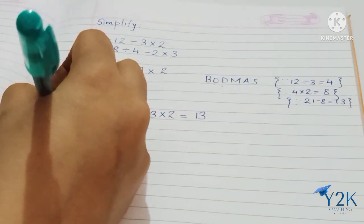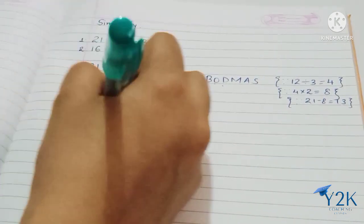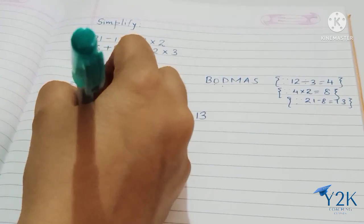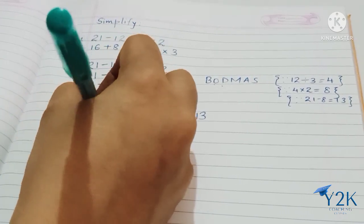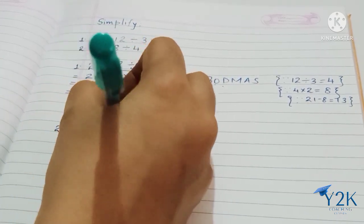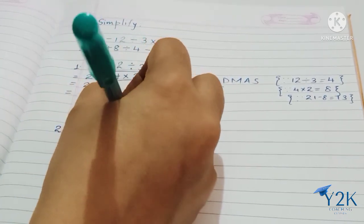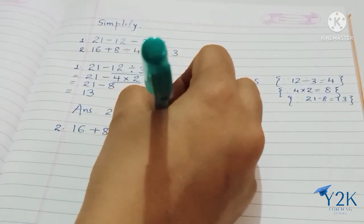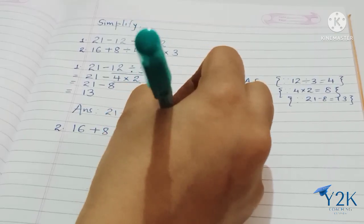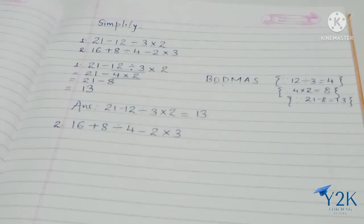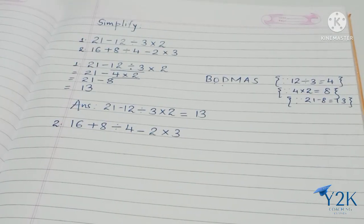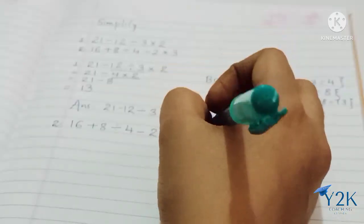Let's start solving the second sum: 16 plus 8 divided by 4 minus 2 into 3. Again we are going to use the rule of BODMAS.